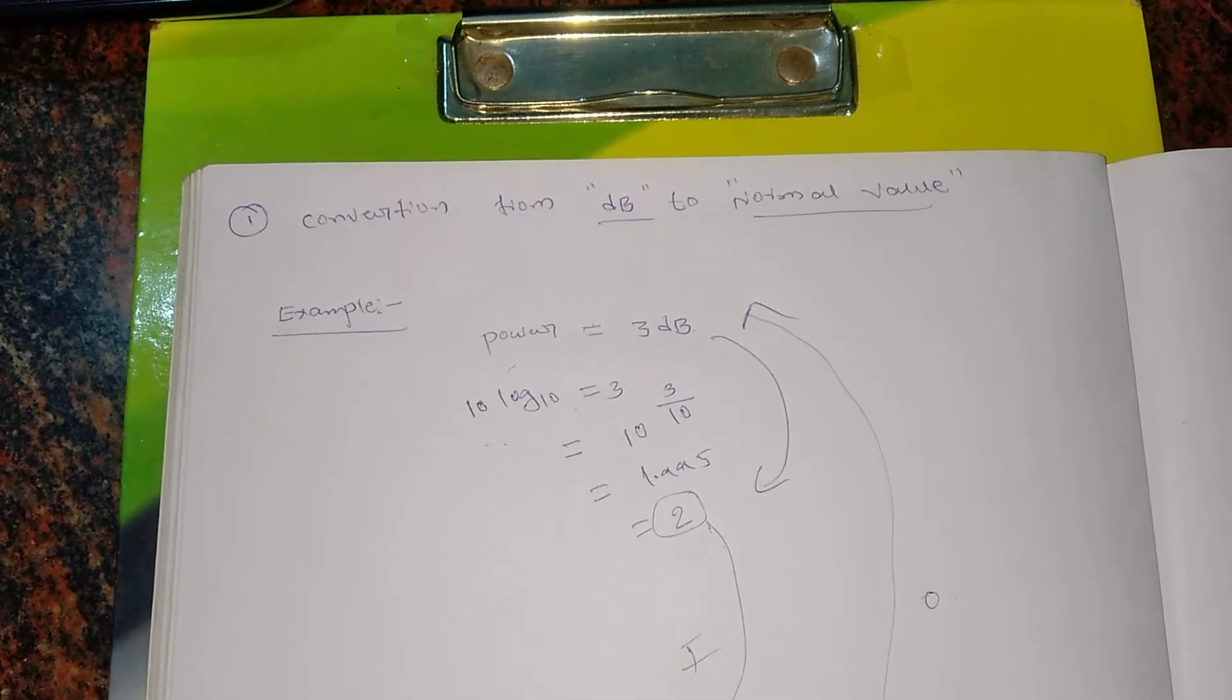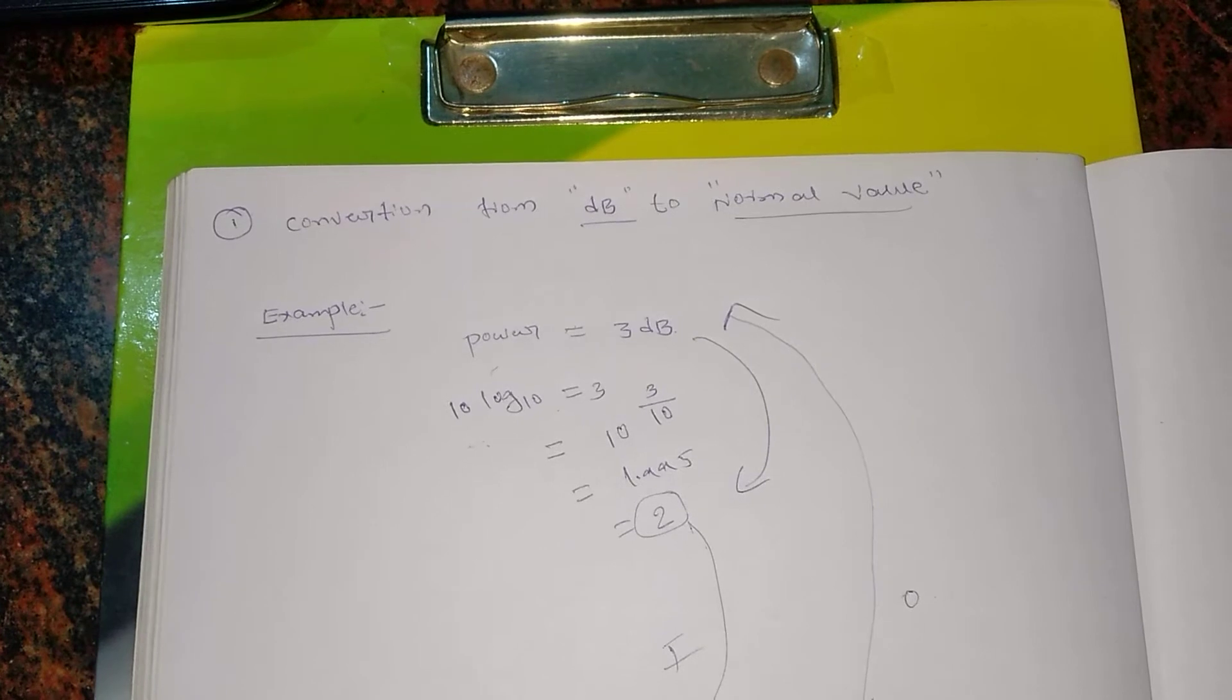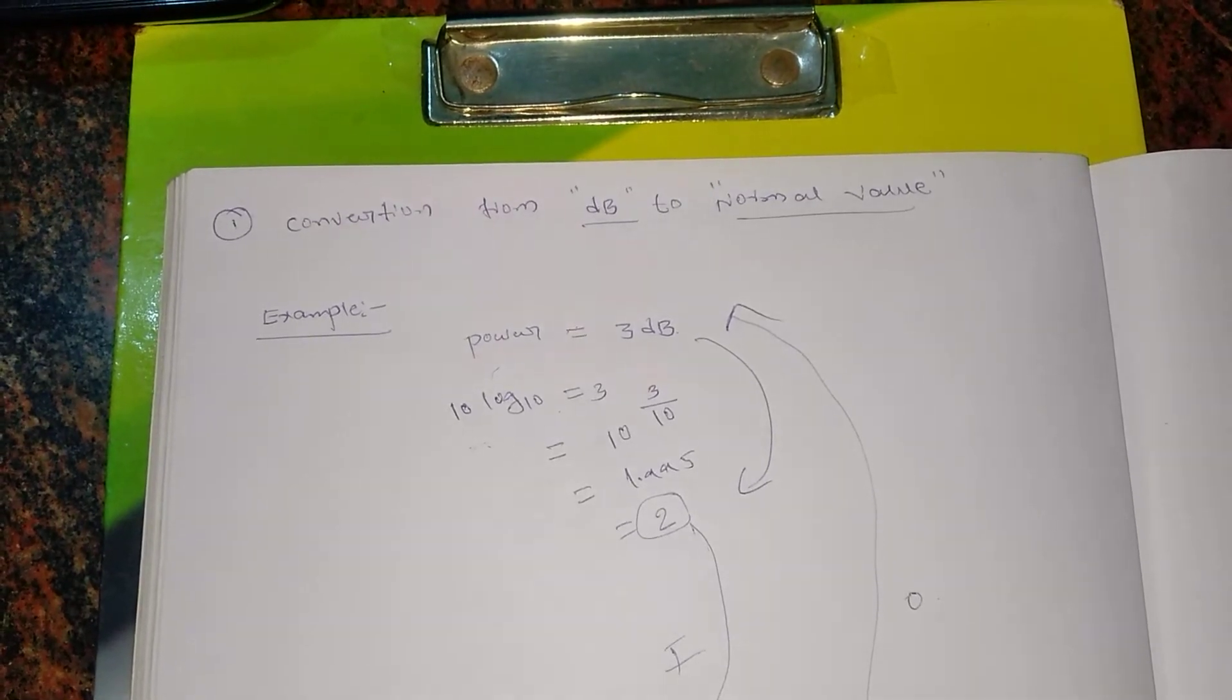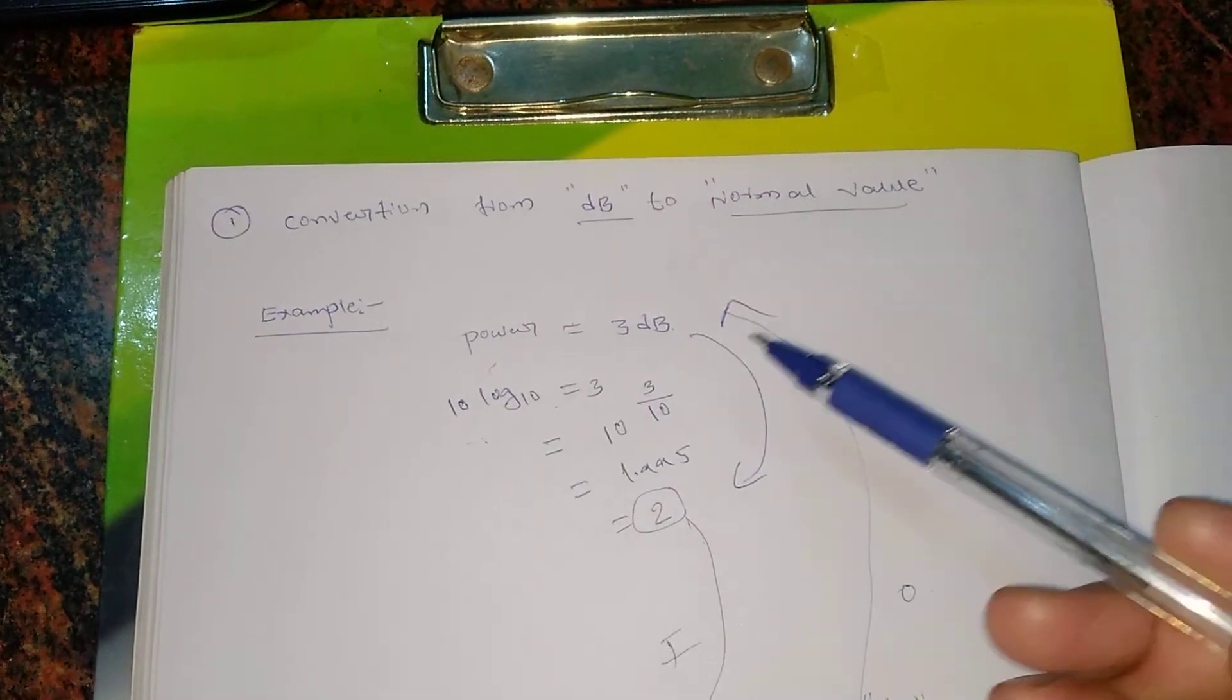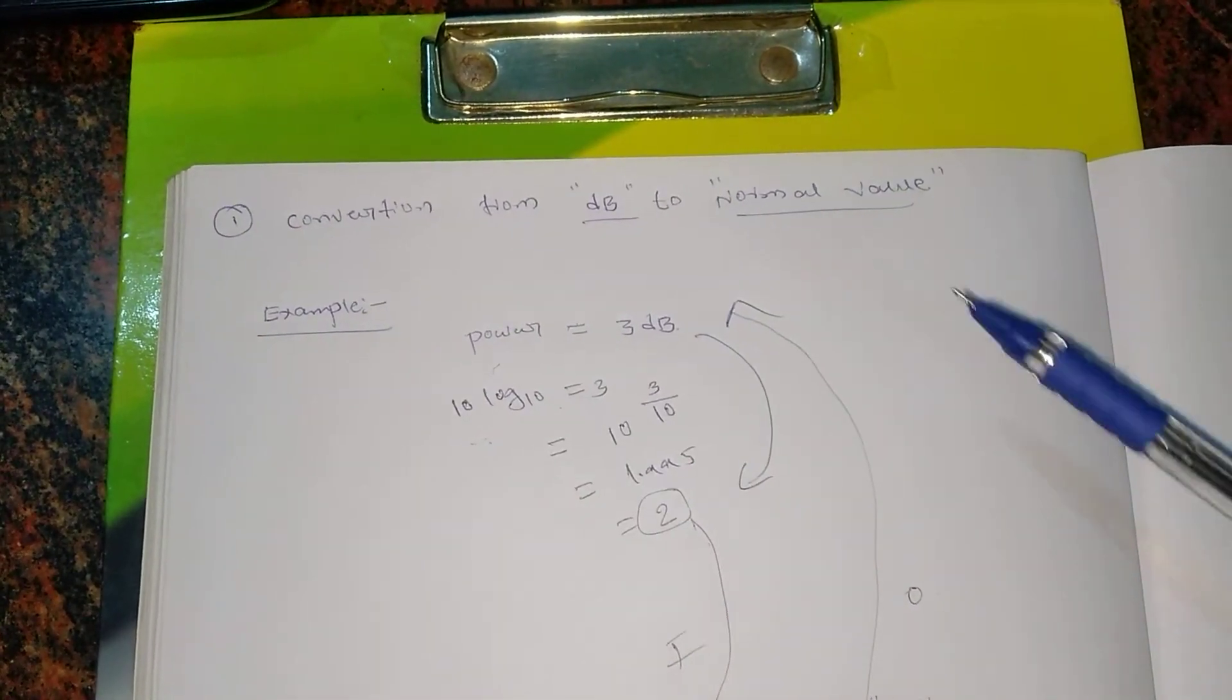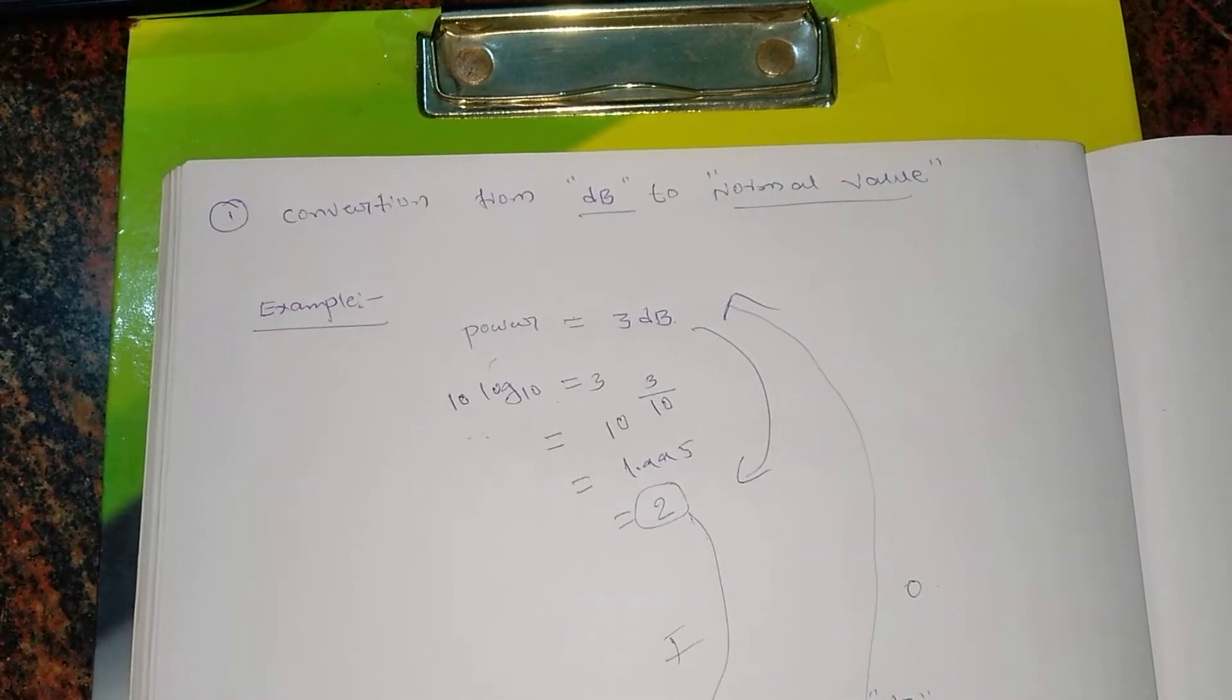For the sake of understanding, I've just taken an example here. Let's take the power which is given as 3 dB. We need to convert this 3 dB to normal value, right? 3 dB is already given and I need the normal value for this one.